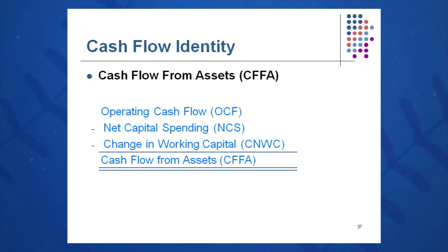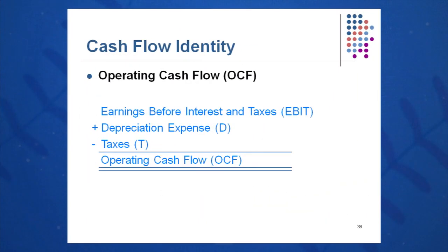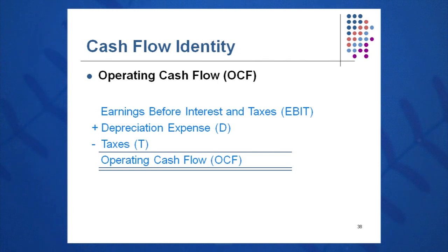Let's break down cash flow from assets and see where we find this information. Cash flow from assets is OCF minus NCS minus CNWC. Operating cash flow comes exclusively from the income statement. For example, looking at Microsoft, we take earnings before interest and taxes from the income statement, add back depreciation expense — also from the income statement — and subtract taxes. This gives operating cash flow, the first term in your cash flow from assets calculation.